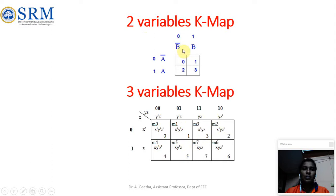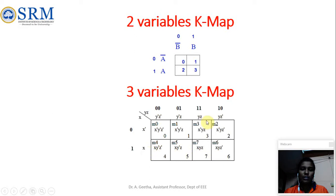How to find the value of each cell present in the K-map? For example, for a given cell, what is its row value? It is 0. Its column value is 0, 0. So 0, 0, 0 is 0. Similarly, if we check another cell, its row binary equivalent is 1 and its column binary equivalent is 1, 1. So 1, 1, 1 is 7.